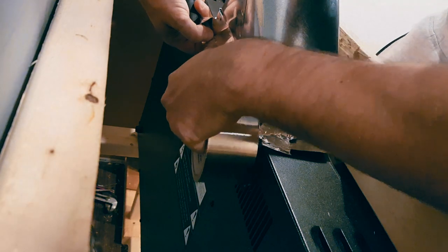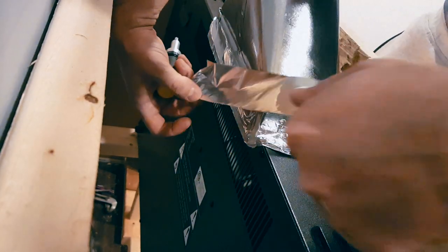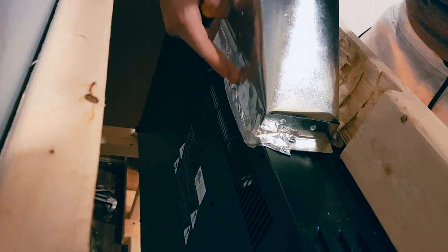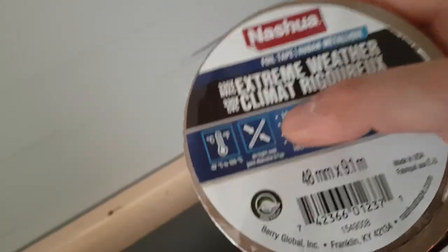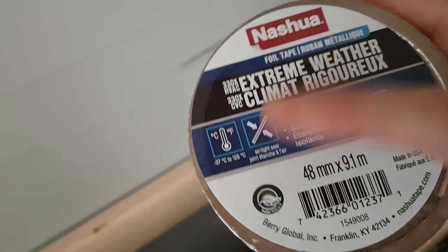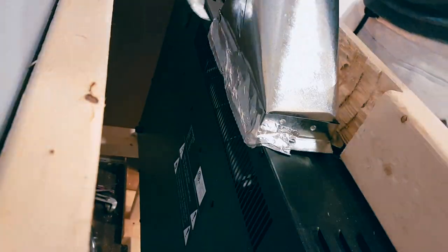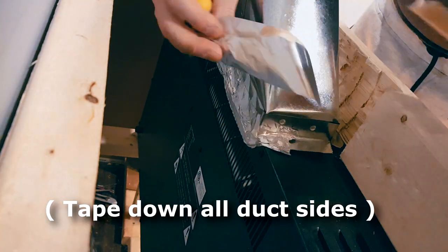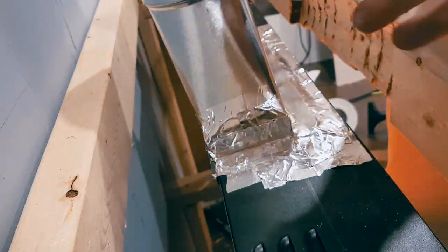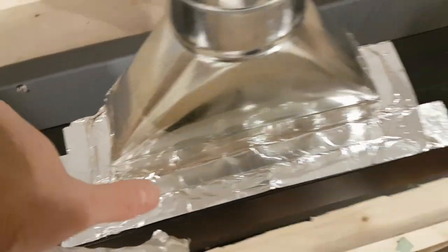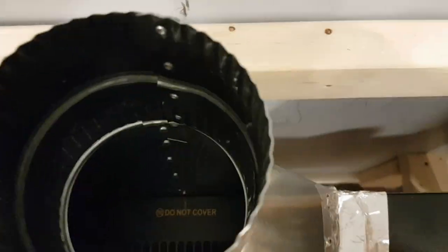Alright, now we're going to put tape all around. This is very flexible tape. They can withstand very high and low temperatures. Make sure the heat is on the whole time so you can see if there's any air leaks out on the side or not. So once this is all taped off, you don't need to but you can just put a little bit on the inside as well.